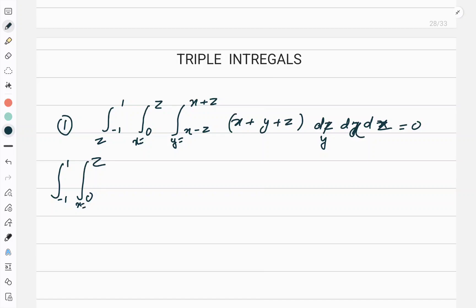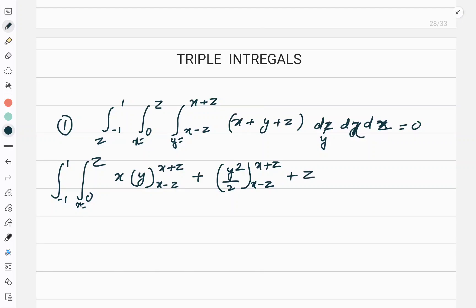Now I am integrating with respect to y, so x is a constant and x remains constant. The integral of y gives y squared by 2, and I write down the limits x minus z and x plus z. Again, z is a constant, so we apply the limits from x minus z to x plus z.